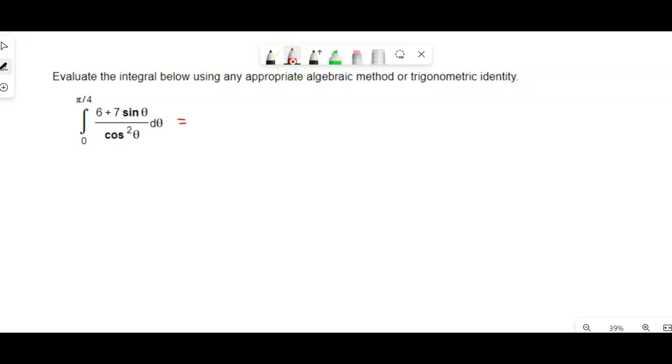All right Calculus, we're looking at the definite integral from zero to pi over four of this function that contains trigonometric functions in the top and bottom, and notice that this is saying, hey, you might want to use a trig identity here.